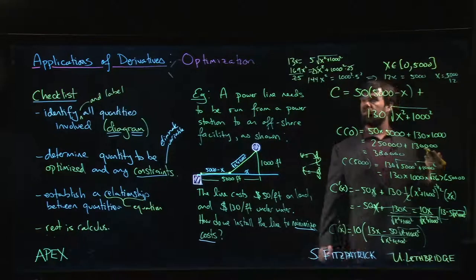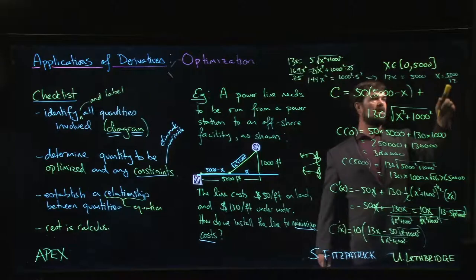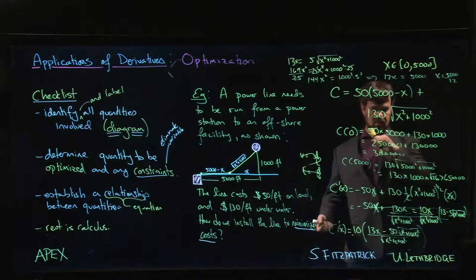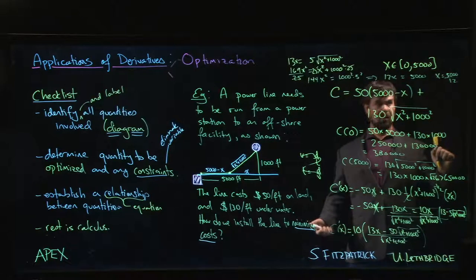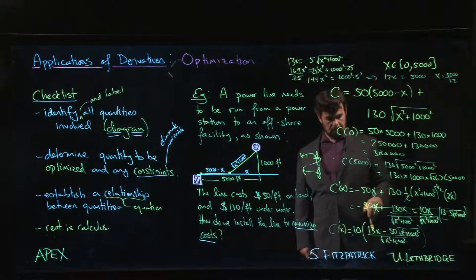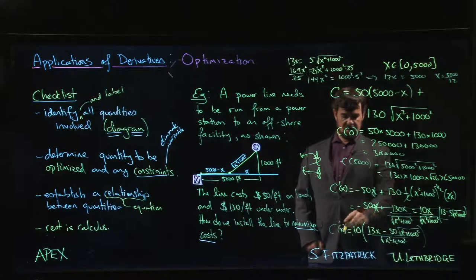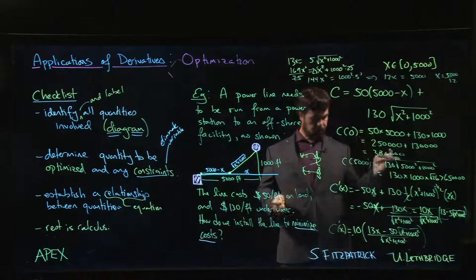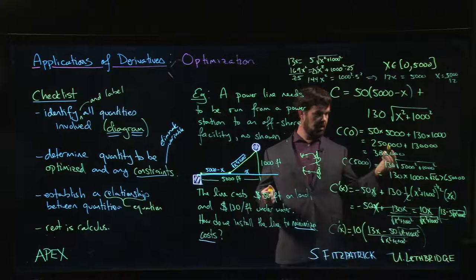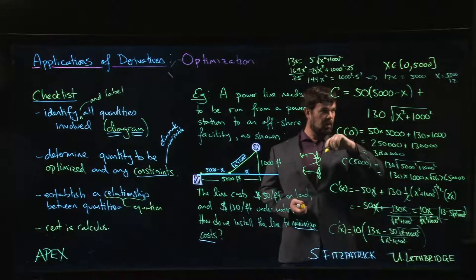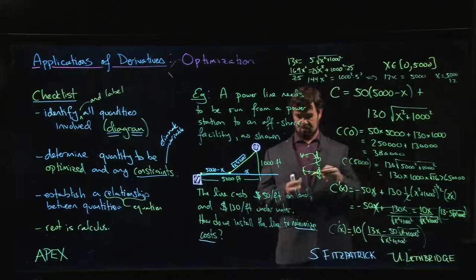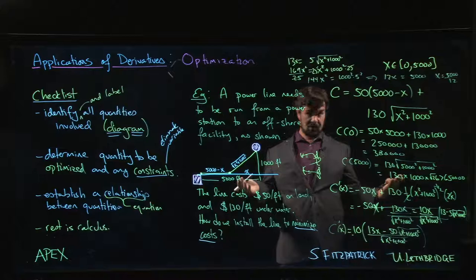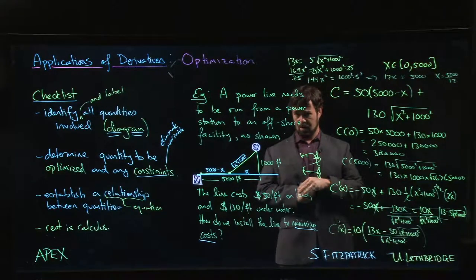The last step is to plug x = 5000/12 back into the original cost function and verify the value is less than $380,000 and $650,000. You can also check that the derivative goes from negative to positive at that critical number to confirm it's a minimum. It's easy to mess up simple things in complex problems — pause, be careful, and use sanity checks like checking that a distance doesn't come out negative.